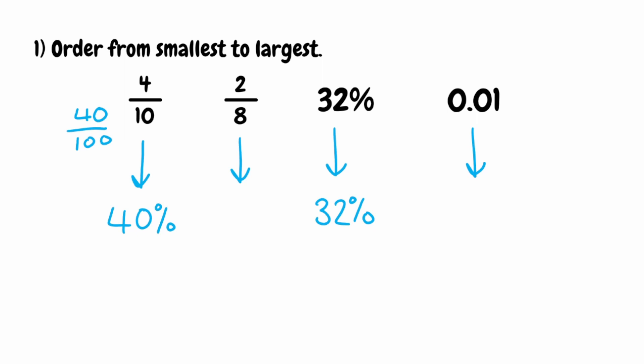Now for 2 eighths, we want to convert that to a percentage. First, we can simplify the fraction — dividing the numerator and denominator both by 2 gives us a quarter. This is a very common fraction: it's just 25%. But if we didn't know that, we could find an equivalent fraction to a quarter over 100 by multiplying the bottom by 25, giving us 25 over 100, which is 25%.